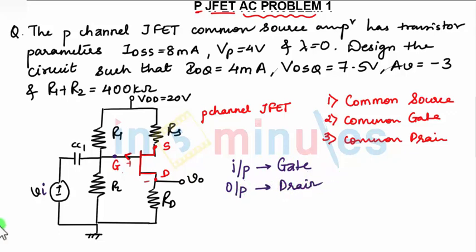Which terminal is left out is the common terminal. In this, we are not using the source terminal. We have gate, drain, and source. We are not using source, so it becomes common source configuration.